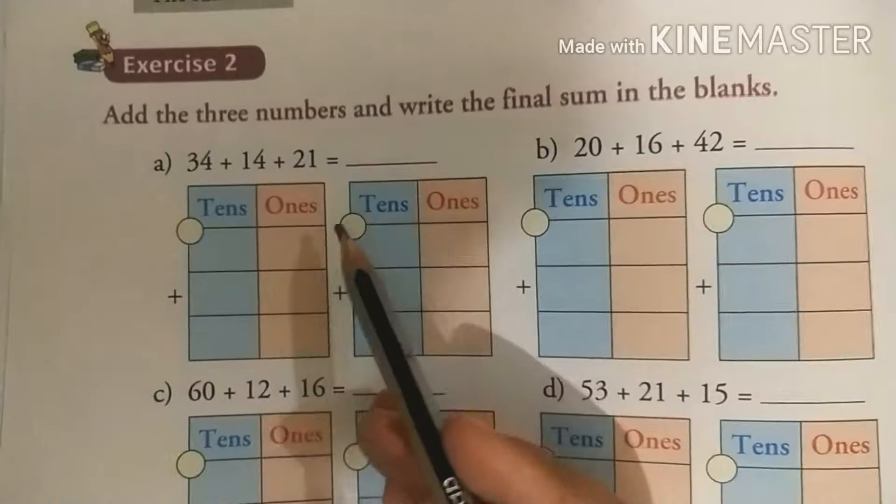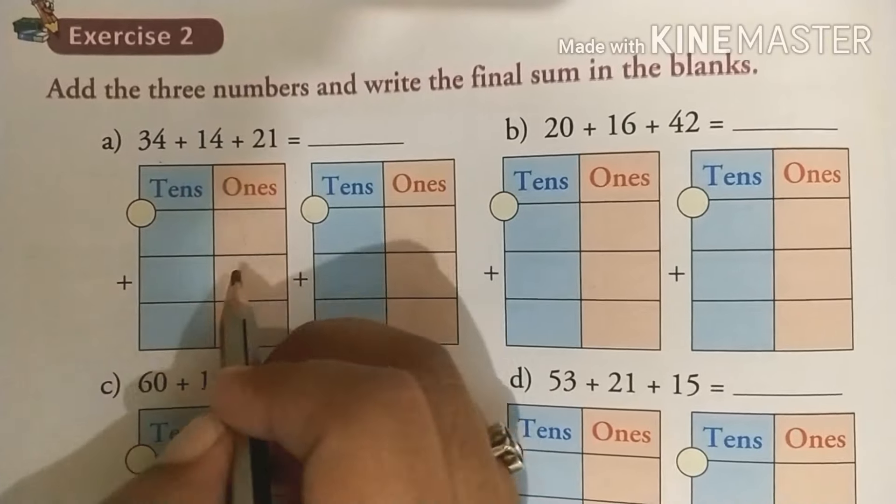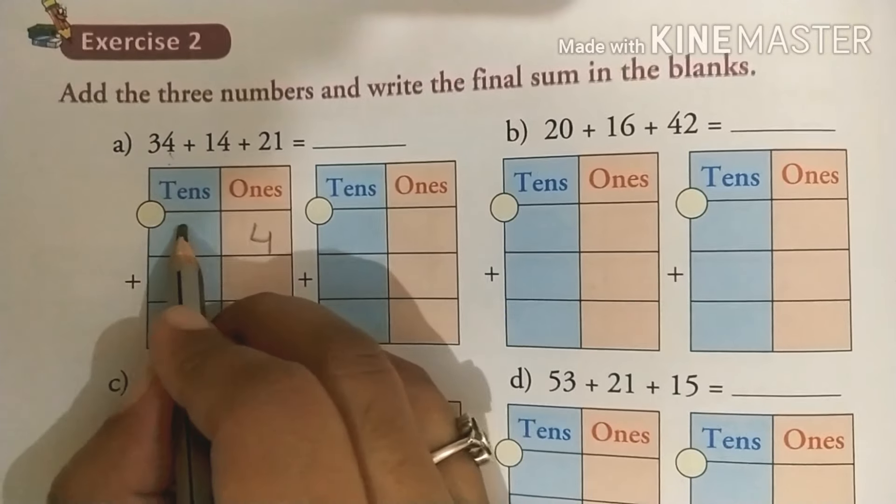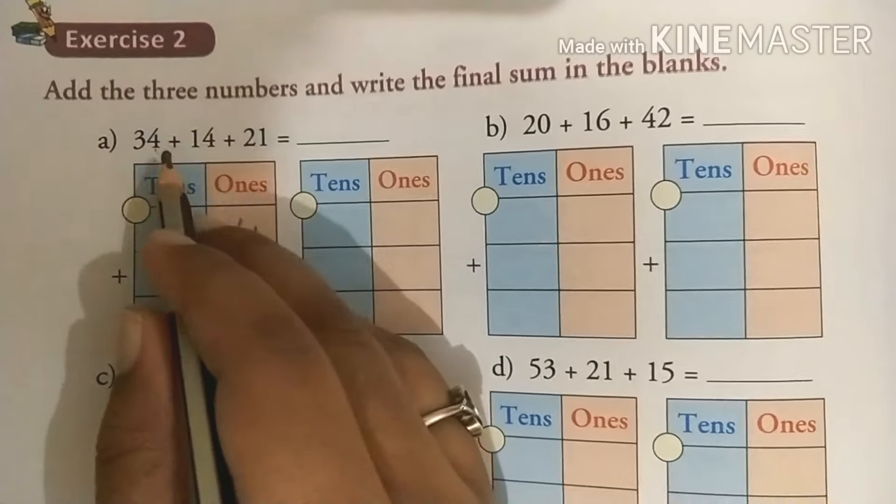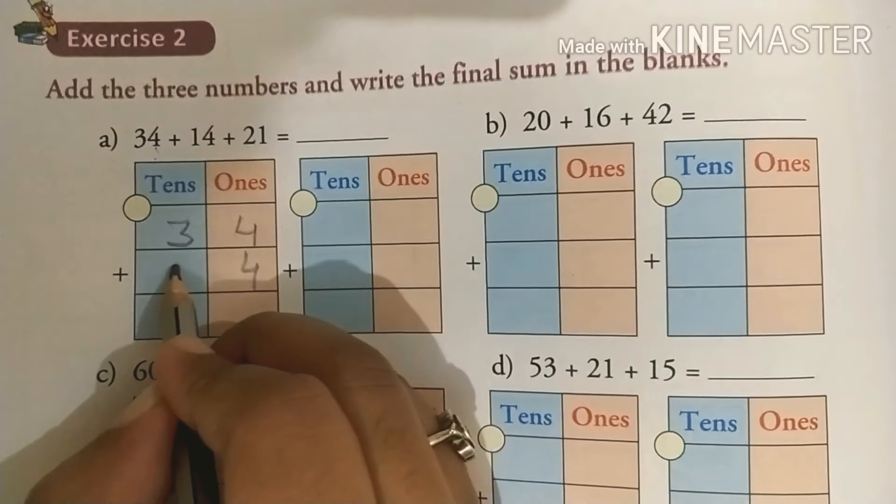Same wayse hi exercise 2 mein bhi karna hai. 34 plus 14 plus 21 is equal to how much? Toh mein ek karke dikhhaati ho aapko. 34 plus 14 means 4 ko ones place pe aap write karoge, 3 ko tens place pe. Pher second number 14 hai, toh 4 ko ones place pe, 1 ko tens place pe.